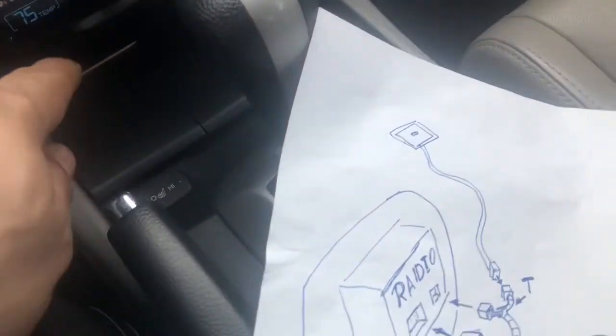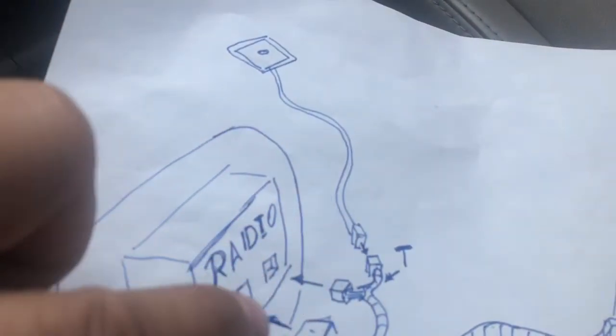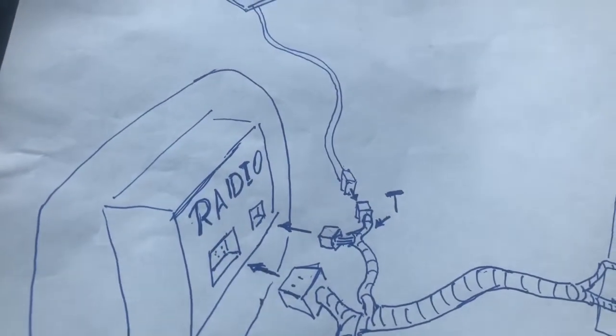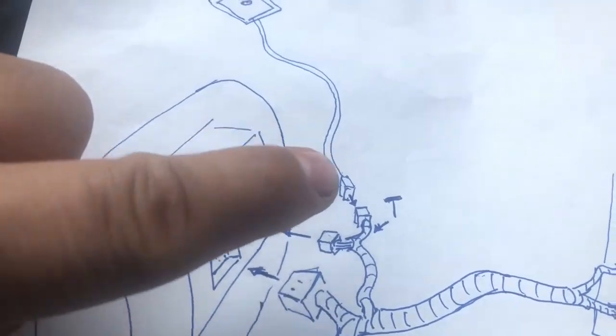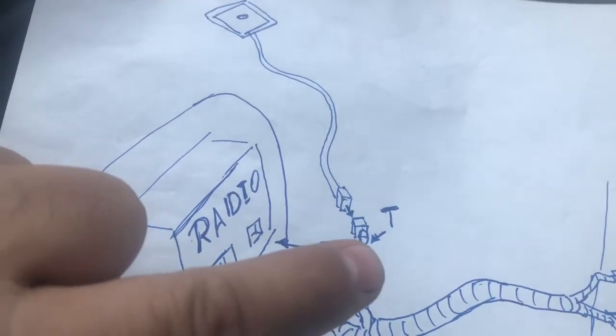It's coming all the way underneath the plastic and it connects to the back of the original radio. You need to disconnect the original and plug the T harness to that one, and the other part connects to the jack.